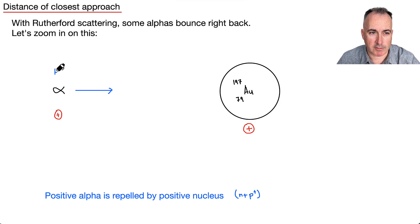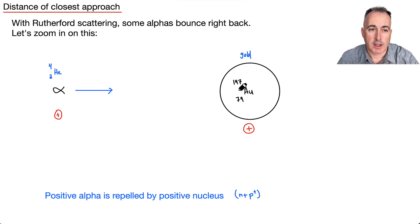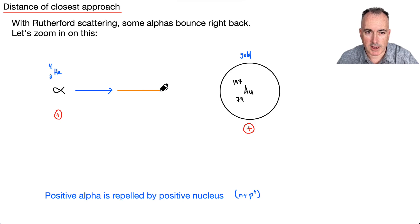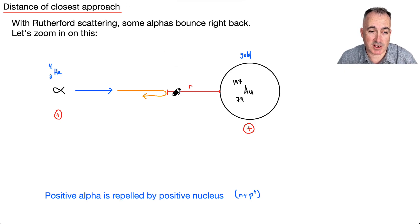If you have an alpha particle — remember, an alpha particle is helium-4, which has a 2 at the bottom, so it has two protons — and this one here is gold, which is Au, with atomic number 79. In that extreme example of Rutherford scattering, this alpha particle comes in, turns around, and we define R as the distance of closest approach. The reason is that this positive alpha particle is repelled by the positive nucleus, which is positive because of its protons.